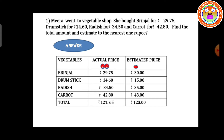Next, carrot: 42 rupees 80 paise. The paise value is 80, so add plus 1 to the rupee value: 42 plus 1 is 43 rupees. Now find the total of actual price and estimated price. The total actual price is 121 rupees 60 paise, and the total estimated price is 123 rupees. Is it clear?